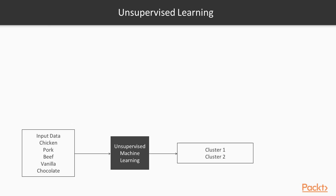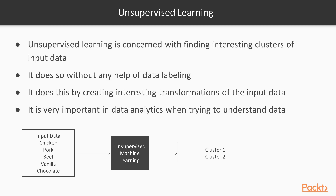Now let's move on to unsupervised learning. Unsupervised learning is concerned with finding interesting clusters or groups that belong together in input data. We don't have labeled data here — we just give an algorithm a bunch of data and tell it to figure out what belongs together. For example, with five inputs — chocolate, vanilla, beef, pork, and chicken — we send this data to an unsupervised algorithm like k-means, one of the most popular unsupervised learning algorithms, and it outputs clusters using a distance metric. It figures out that vanilla and chocolate belong to one cluster, like a dessert cluster, and the three meats belong to a meat cluster.